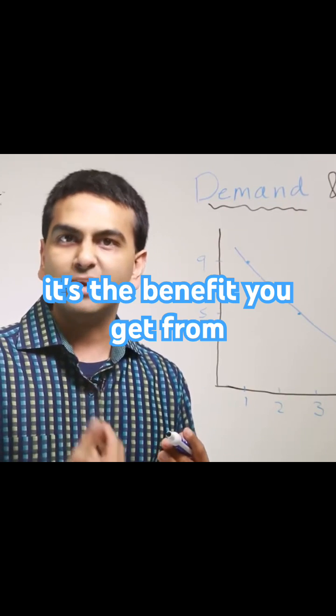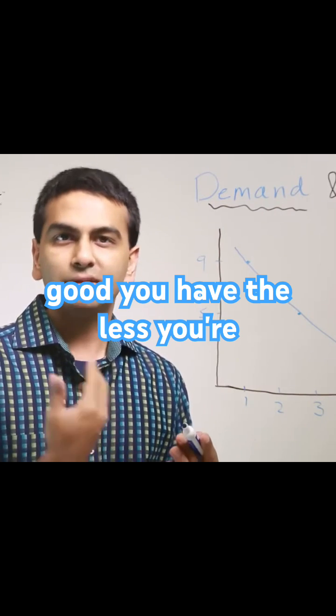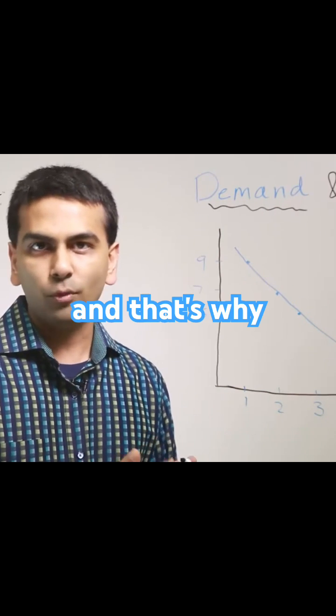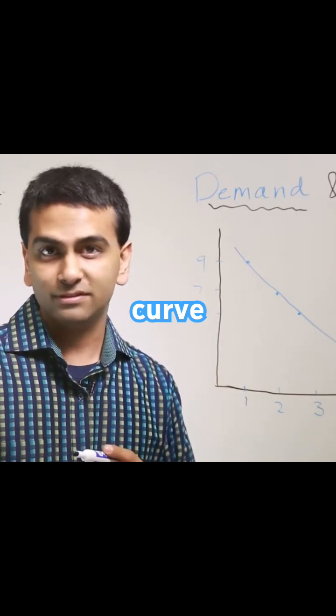It's the benefit you get from each extra item and it usually goes down. The more of any good you have, the less you're going to value the next one and that's why it's a lower and lower benefit and that's why the demand curve is downward sloping.